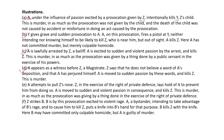Illustration E: A attempts to pull Z's nose. Z, in the exercise of right of private defense, lays hold of A to prevent him. A is moved to sudden and violent passion and kills Z. This is murder as the provocation was given by an act done in the exercise of the right of private defense. Illustration F: Z strikes B. B is excited to violent rage. A bystander, intending to cause B to kill Z, puts a knife into B's hand. B kills Z with the knife. B may have committed only culpable homicide but A is guilty of murder.